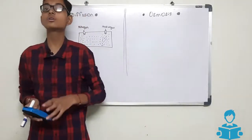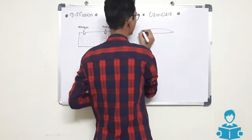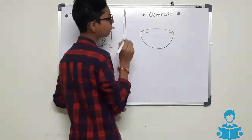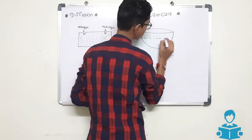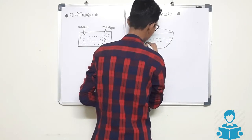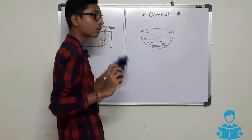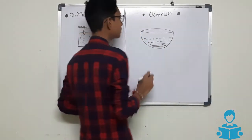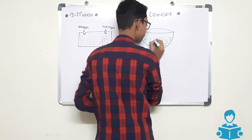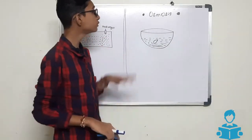We will take a simple example. We have a bowl, and in this bowl we will put some water. We will also put one almond in it. This is an almond.